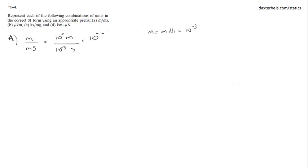This makes it 10 to the third, because 0 minus negative 3 equals 3: meters per second, or kilometers per second, because K stands for kilo, which is 10 to the third.